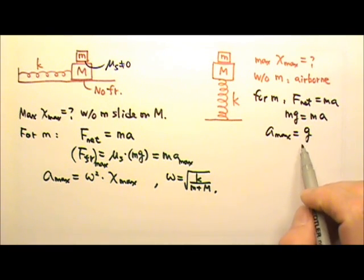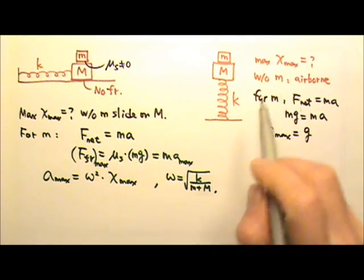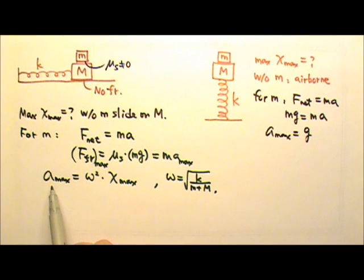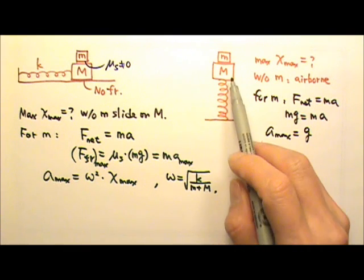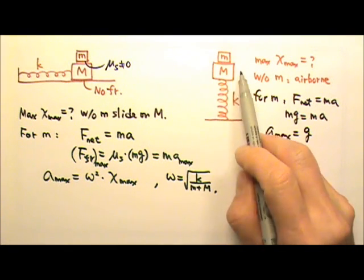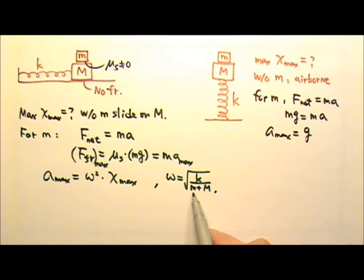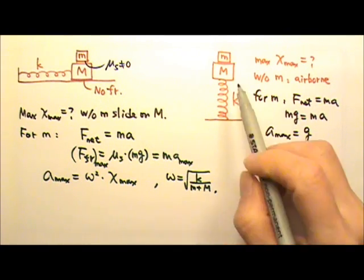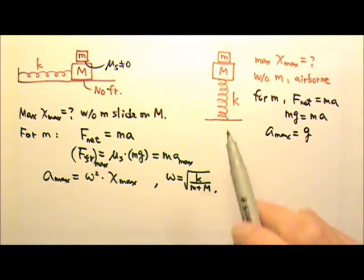To find the maximum amplitude, we set the maximum acceleration equal to omega-squared times the amplitude. The omega here is the square root of k divided by (little m plus big M), because both boxes oscillate together.